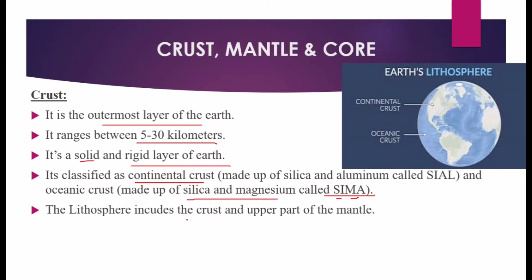The lithosphere includes the crust and the upper part of the mantle. The terms lithosphere and crust are not the same. All terrestrial planets have a lithosphere. The lithospheres of Mercury, Venus, and Mars are much thicker and more rigid than that of Earth. The continental crust is the land part, while the oceanic crust is the watery part.